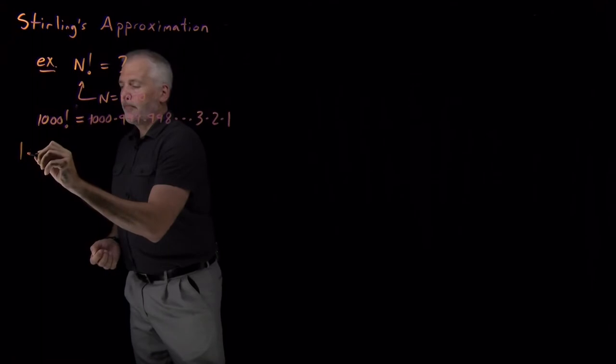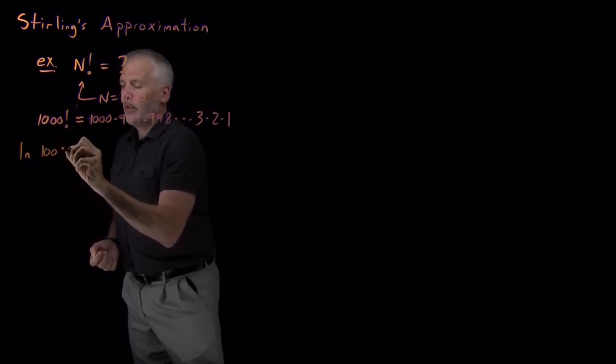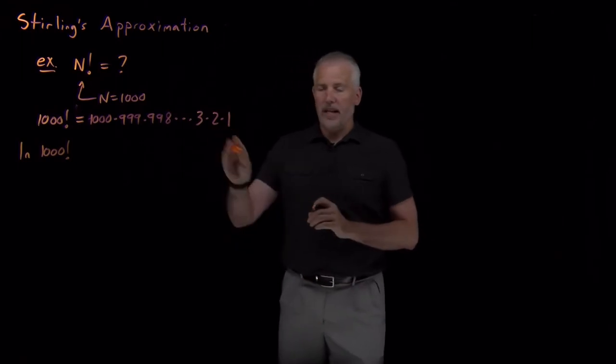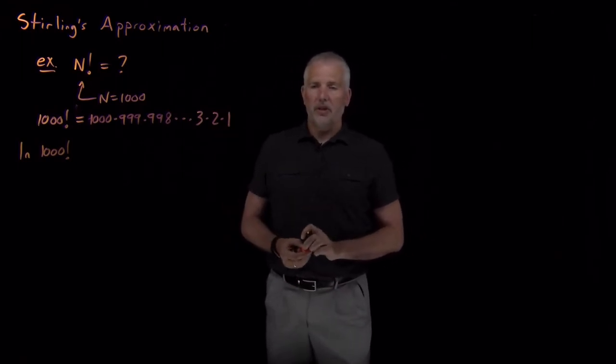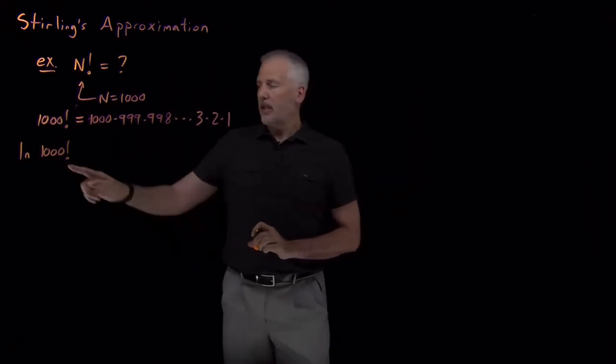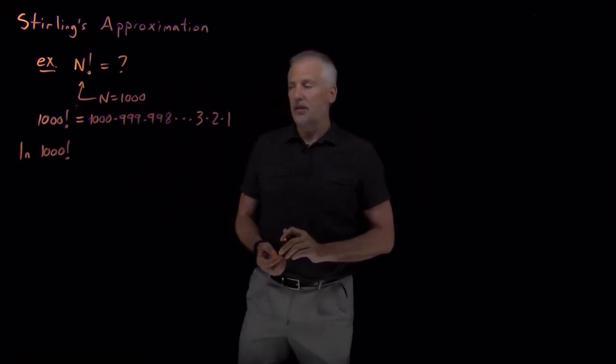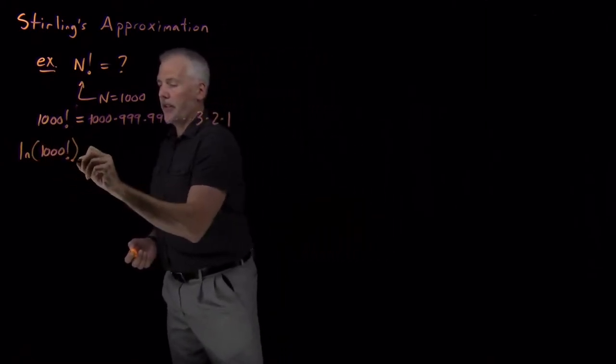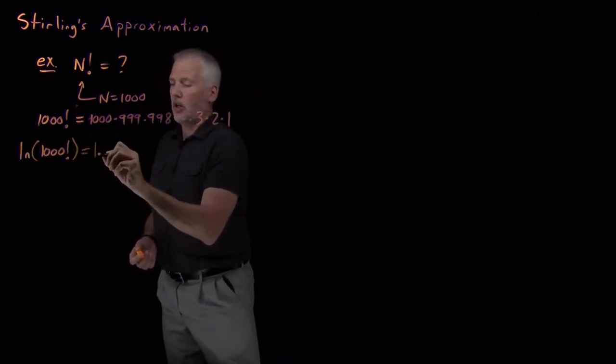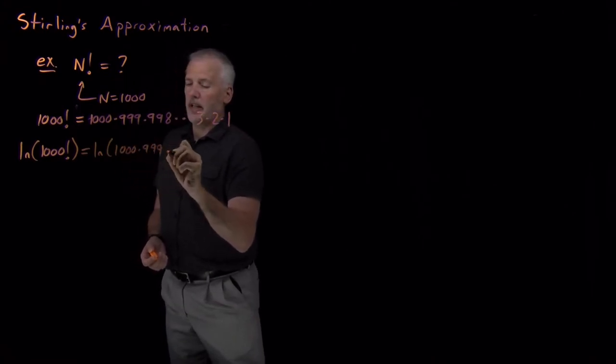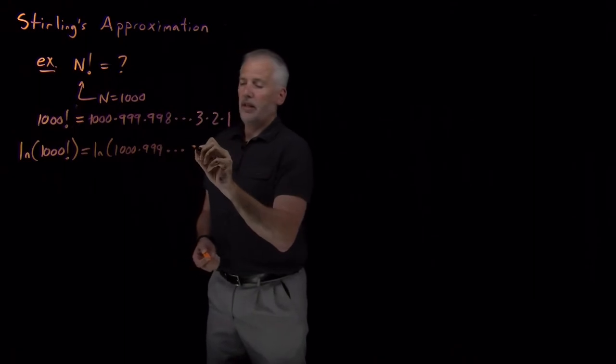What we can do instead is something physical chemists do a lot. When there's a question we can't calculate the answer to, we decide we wanted to ask a different question in the first place anyway. So instead, let's imagine I want to know what the natural log of 1,000 factorial is. So this is the log of 1,000 times 999 times et cetera, 3, 2, 1.